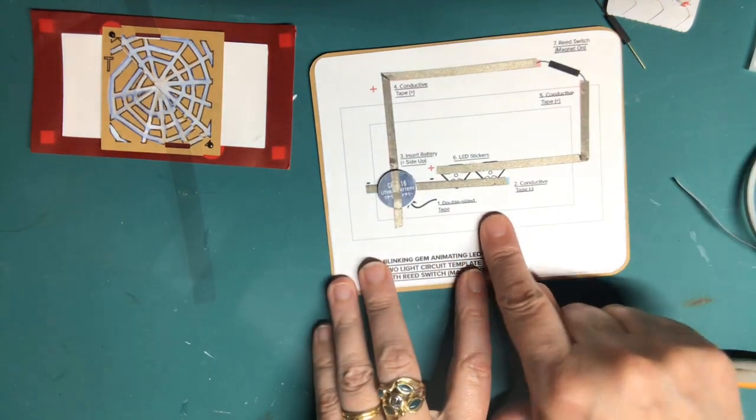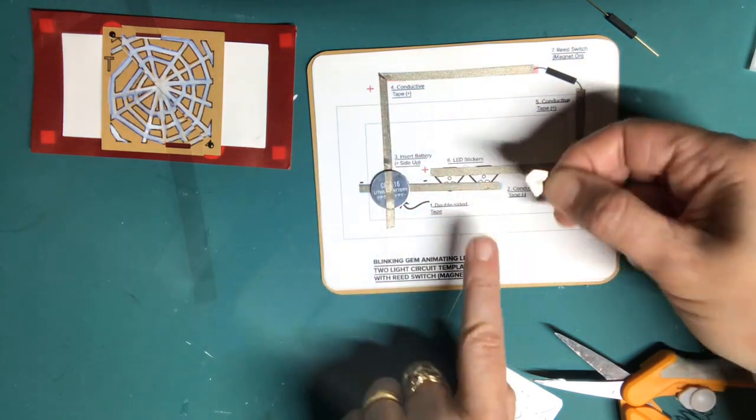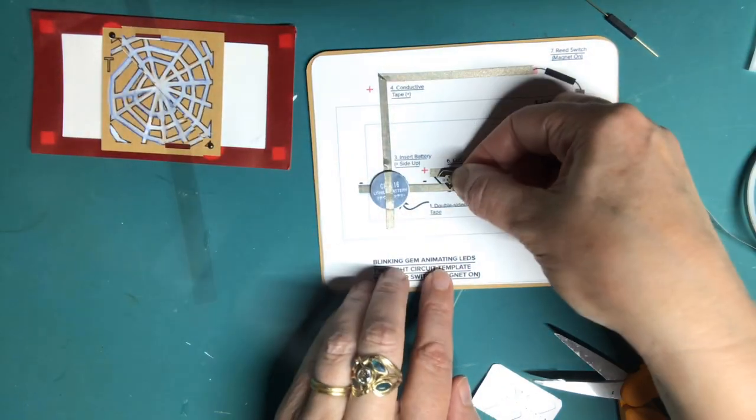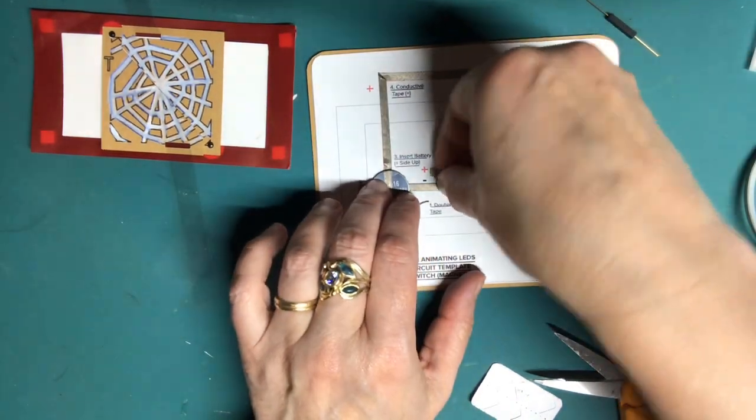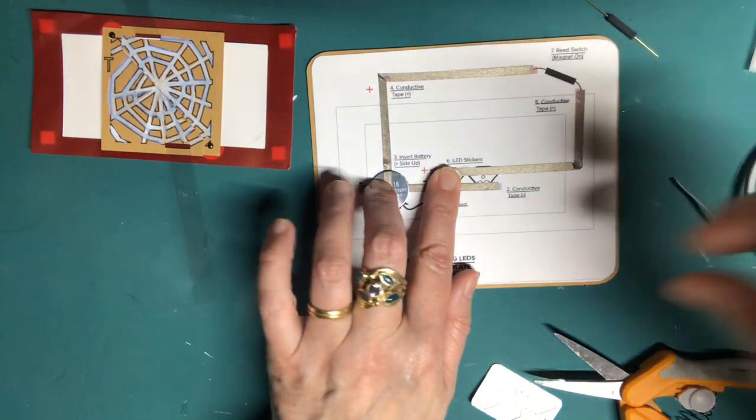Now you can add your LEDs. Like the classic circuit sticker LEDs, the pointy end of the blinking gem sticker is negative while the broader end is positive. Do your best to center the LED in its footprint on the circuit diagram so that it lines up with the holes in your spider piece.